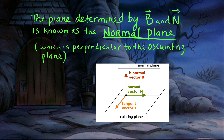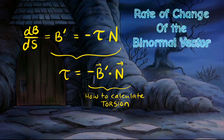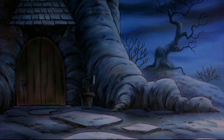The plane determined by the binormal and normal vectors is known as the normal plane, perpendicular to the osculating plane. The measure at which a planar curve moves off of a plane is known as torsion. The binormal vector B measures the direction in which a curve departs from the planar curve, and torsion is the extent to which the curve is being pulled away — it measures how much the moving frame twists as it moves along the curve. To calculate torsion, we take the derivative of the binormal vector, then the dot product with the normal vector; torsion is the negative of that dot product.